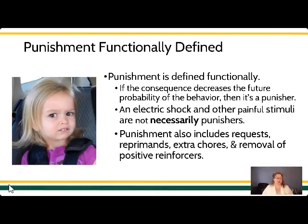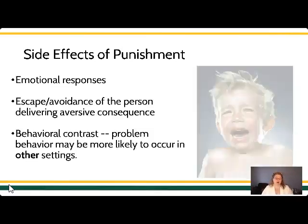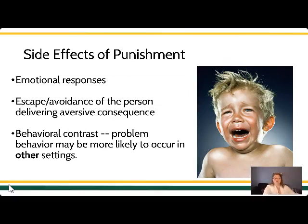Unfortunately, any behavior change procedure is going to have side effects, but the side effects of punishment are pretty severe. What you typically see reported: side effects of punishment include things like emotional responses. When a person experiences punishment — when they experience things like critical feedback that serves as a punisher — you see a lot of side effects. You see people break down; they might even start crying, like you see here. You see that in the future, the person who delivered the punishing stimulus may be avoided by the person who experienced the punisher. For instance, you submit work and your professor says, 'This does not meet the criteria — do it again.' You may be less likely to go see your professor in the future; you may avoid the person who gave you punishment.